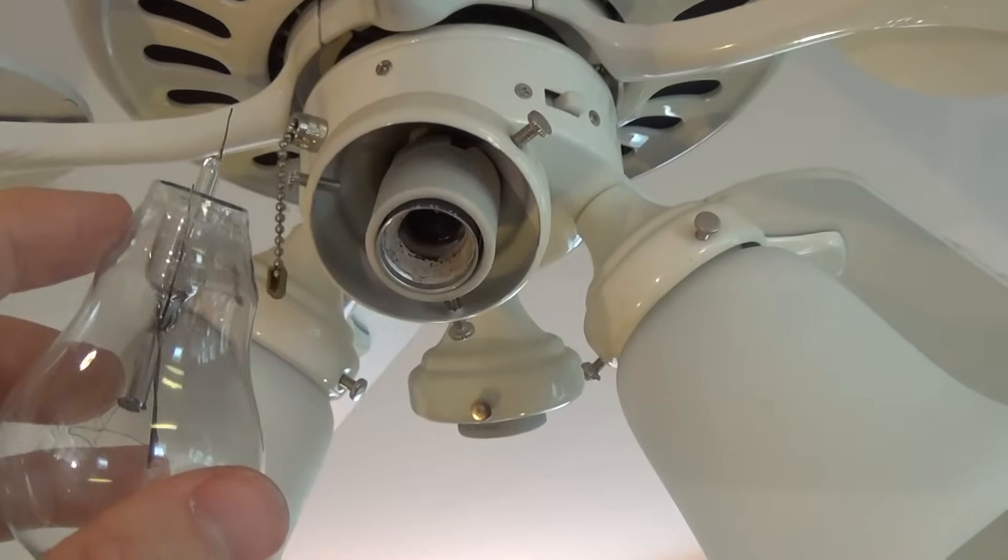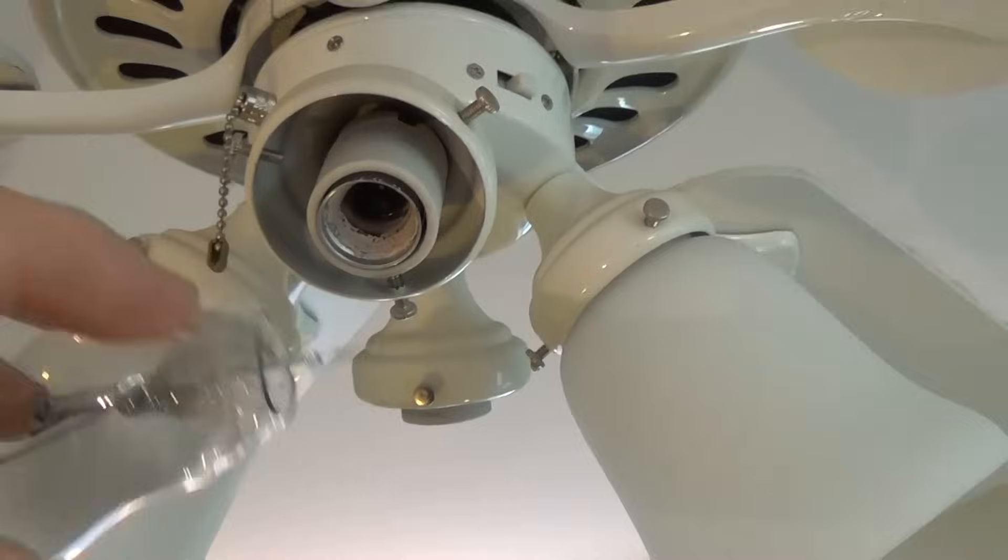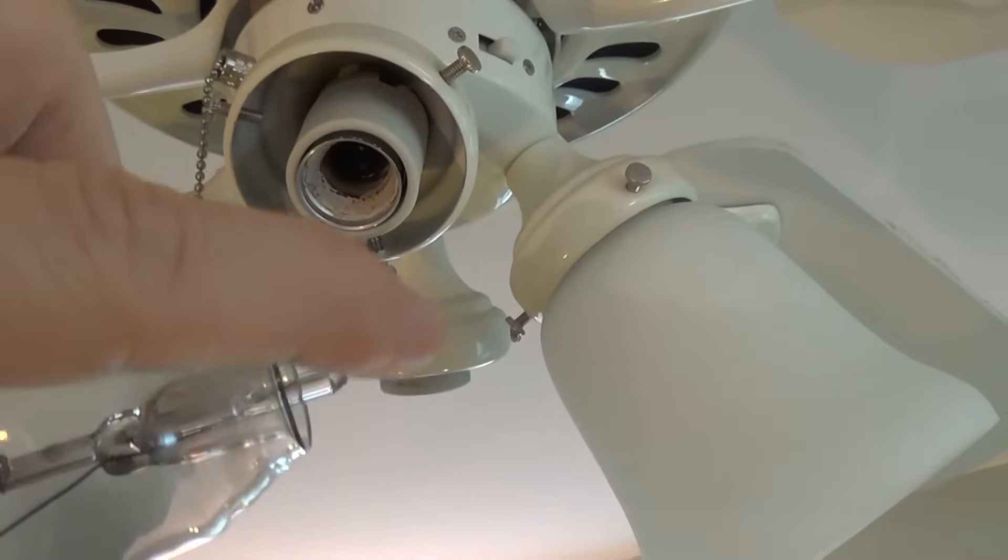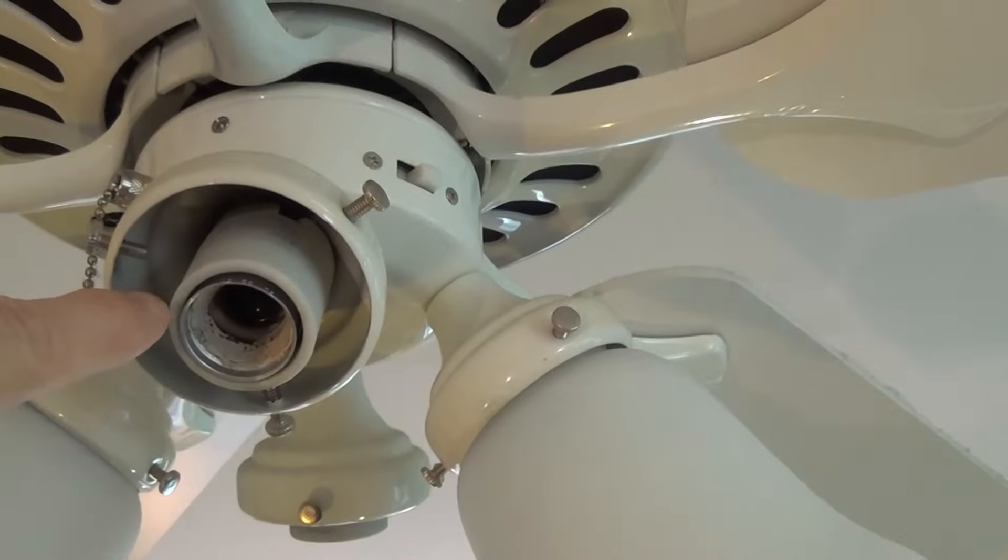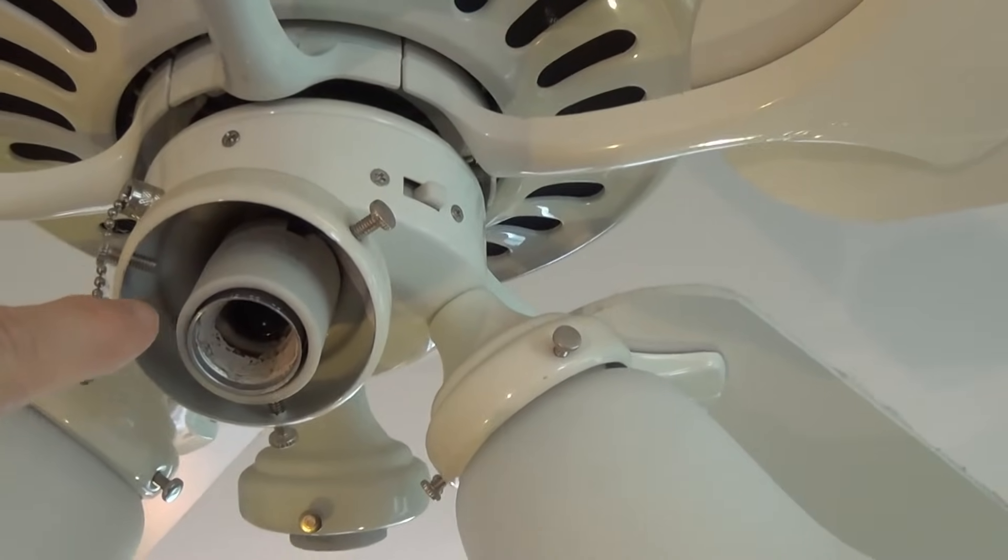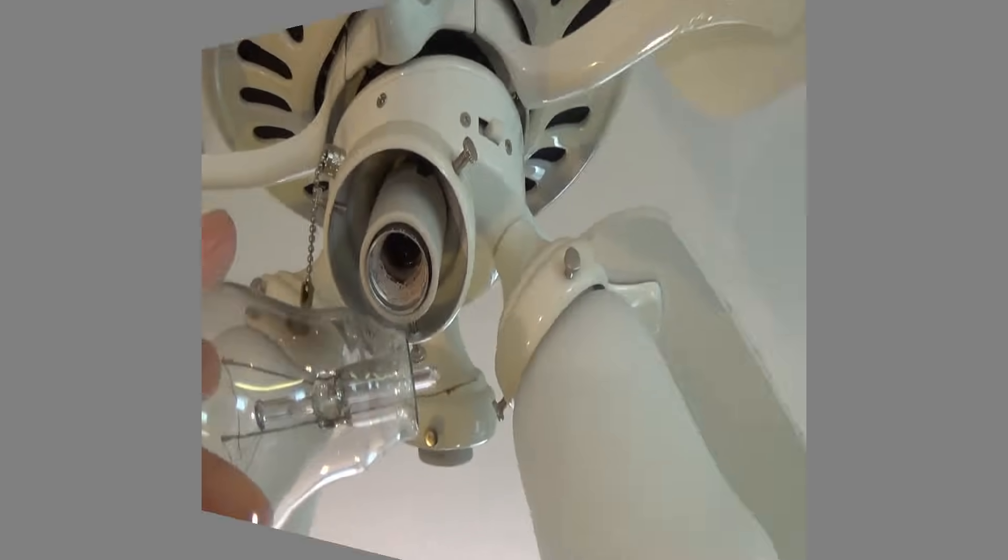As I was unscrewing this light bulb, the metal base came off the light. You can see it here. The wire is sticking out. You can see the metal base stuck in the socket right here. We're going to try to get this out safely so we can replace this light bulb.